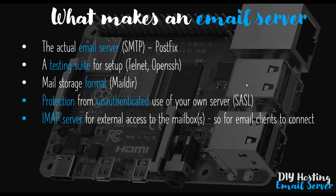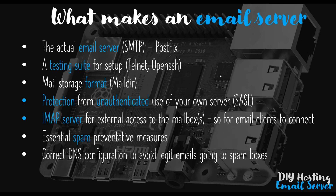We'll be setting up an IMAP server as well, which is required for external access to the mailboxes. Clients like Thunderbird or Outlook will need access to our mail server to receive emails, giving us a nice user interface to send and receive. We'll also implement essential spam protective measures during the setup on the Raspberry Pi. More importantly, we'll be setting up the correct DNS configuration to avoid legitimate emails going from your email server to spam boxes — this is very hard to avoid. You really do have to tick an awful lot of boxes, particularly for Gmail and Outlook, and I'm going to show you how to do that.